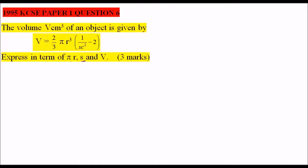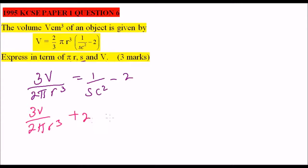So we start by cross-multiplying. We have, multiply both sides by 3, so we have 3V divided by 2 pi R cubed equals 1 over SC squared minus 2. Add 2 to both sides, so we have 3V over 2 pi R cubed plus 2 equals 1 over SC squared.